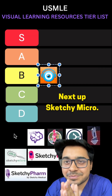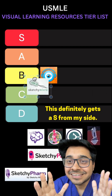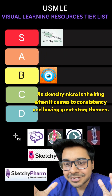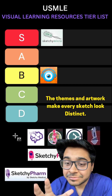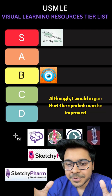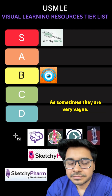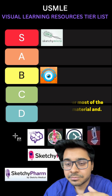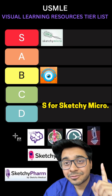Next up, Sketchy Micro. You already know what it is. This definitely gets an S from my side, as Sketchy Micro is the king when it comes to consistency and having great story themes. The themes and artwork make every sketch look distinct. Although I would argue that the symbols can be improved as sometimes they're very vague, it does cover most of the high-yield material. S for Sketchy Micro.